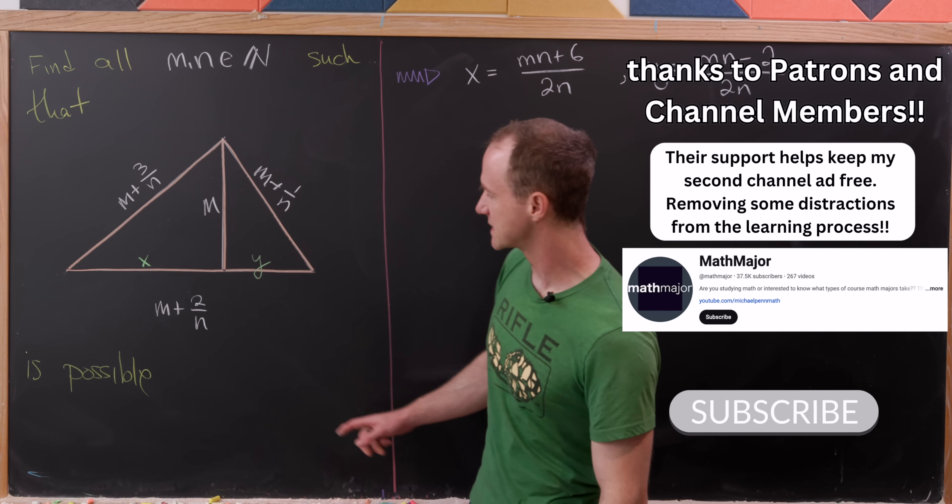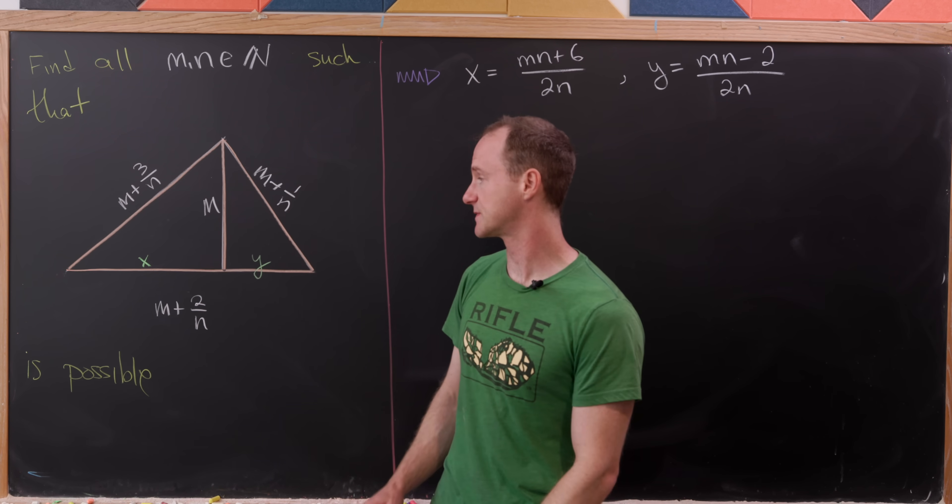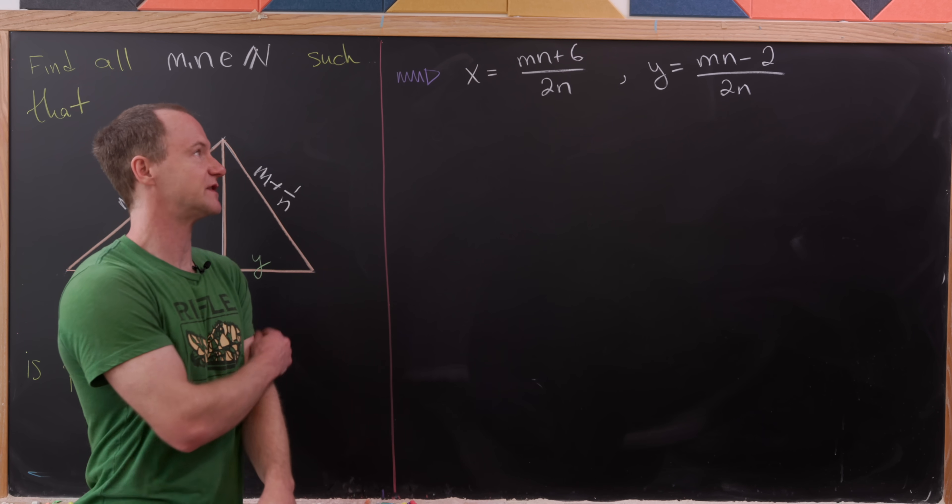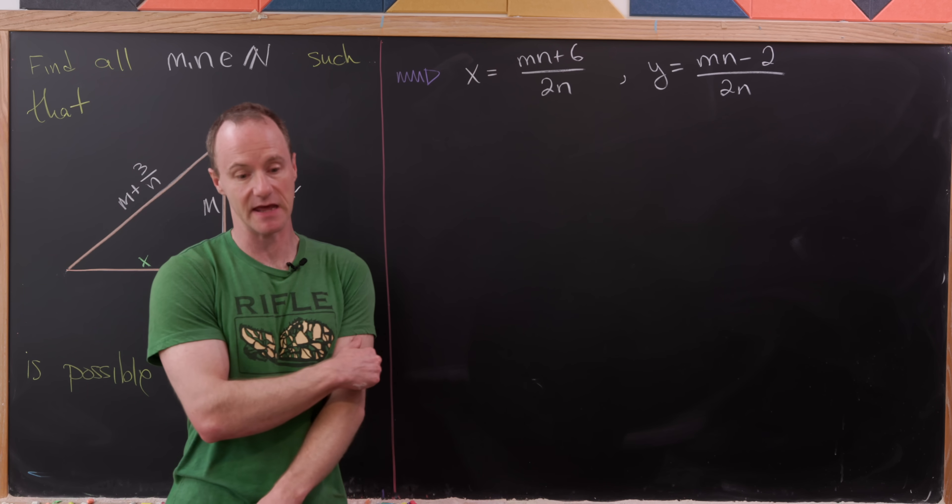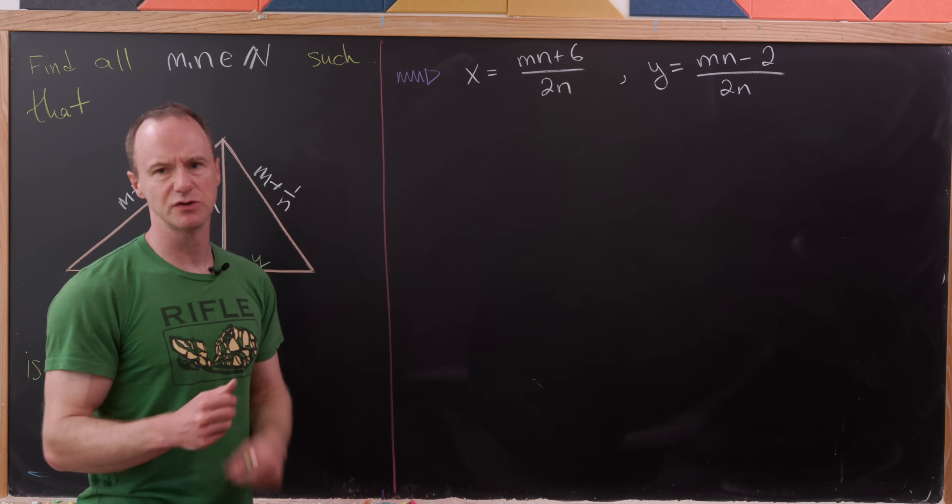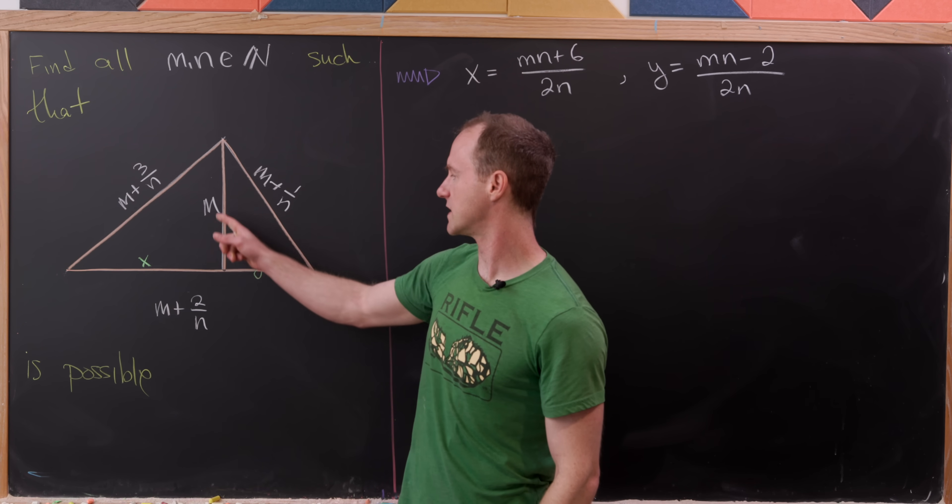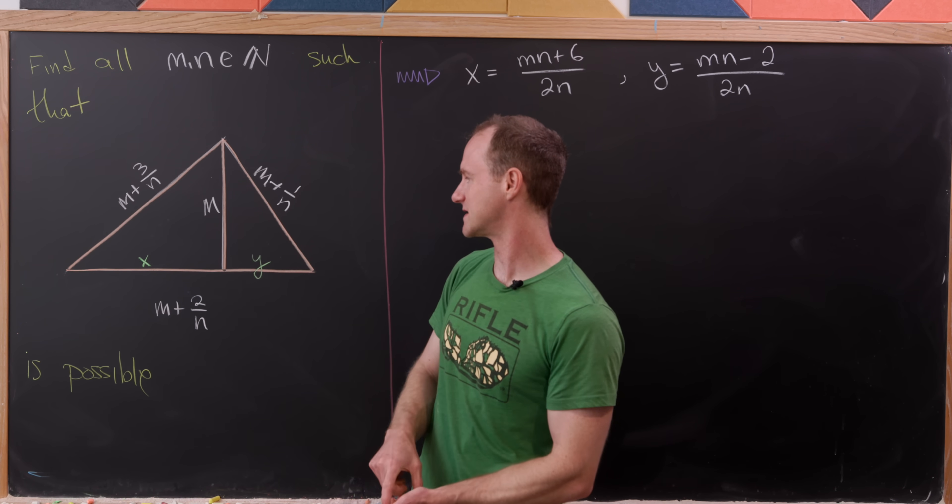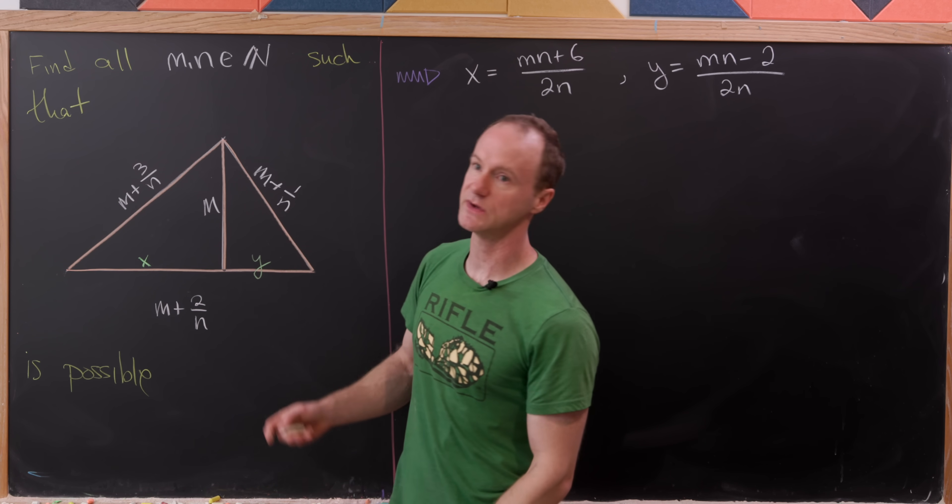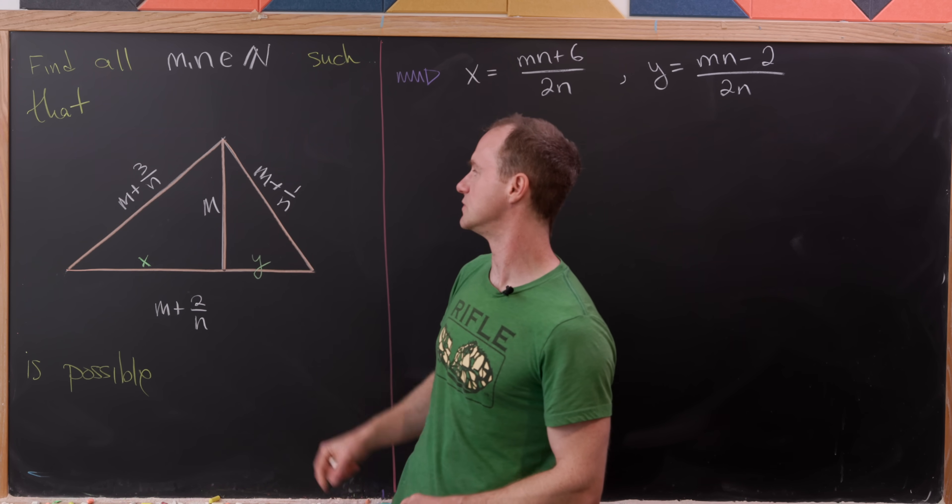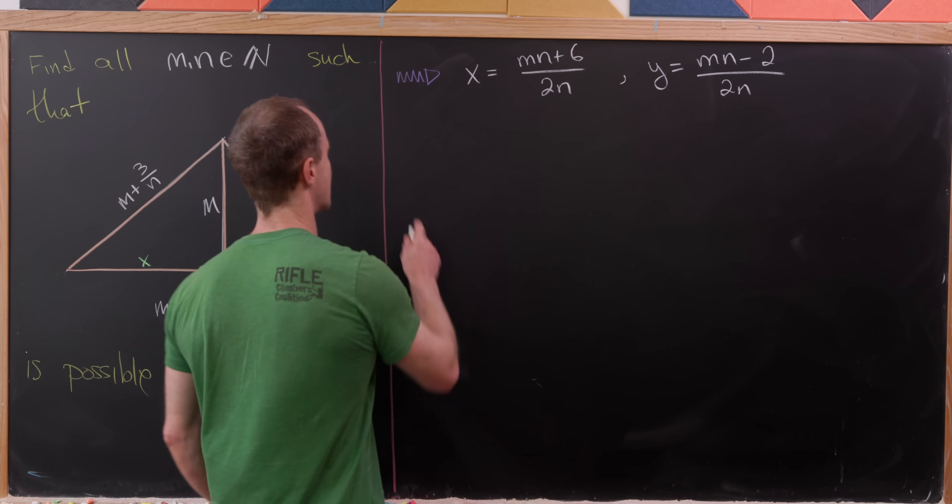So previously we took this bottom edge of our triangle and split it into two pieces x and y, which we in turn solved in terms of m and n. And now we want to do the last step here, which will be to focus on this right triangle over here on the right side. And what we'll do is use the Pythagorean theorem to express m squared in terms of these two sides. So let's do that.